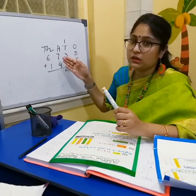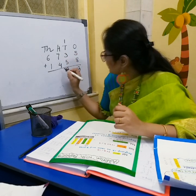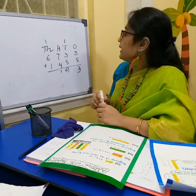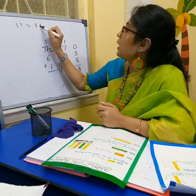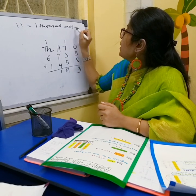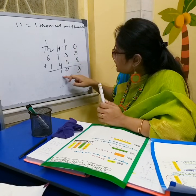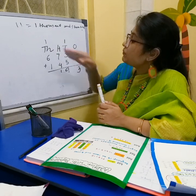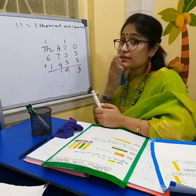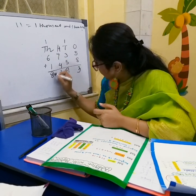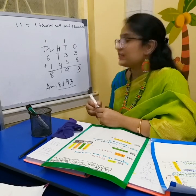Now comes the hundreds column: 7 plus 4 equals 11, which we regroup as 1 thousand and 1 hundred. So we write 1 under the hundreds column and carry 1 to the top of the thousands column. Now we add the thousands column: 6 plus 1 is 7, and 7 plus 1 carried is 8. So we get the answer 8,193.